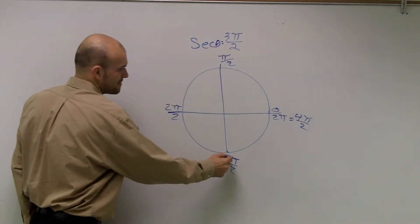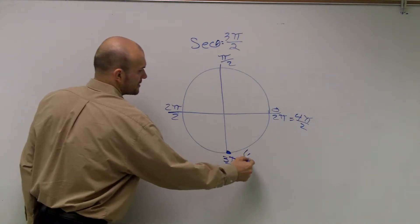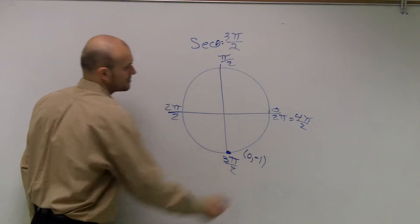Now I see my point - what is this coordinate? It's (0, -1).